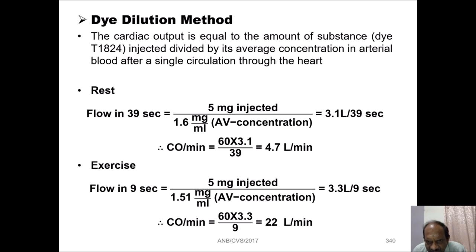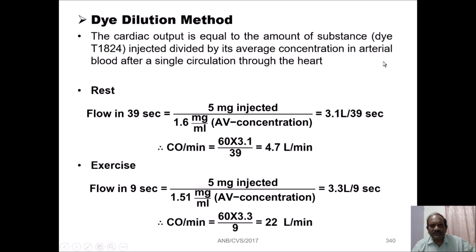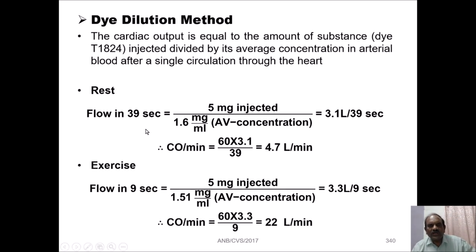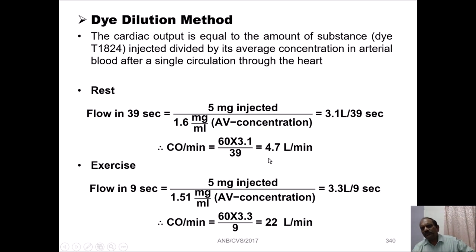Let us assume that 5 mg of the substance is injected, and the average concentration in the arterial blood is 1.6 mg per ml. The total time taken by the substance to circulate in the body is 39 seconds. Hence, flow for 39 seconds is 5 divided by 1.6, which gives 3.1 liters per 39 seconds. Converting to 60 seconds: 60 multiplied by 3.1 divided by 39 gives a cardiac output of 4.7 liters per minute — the cardiac output at rest.